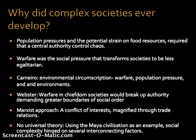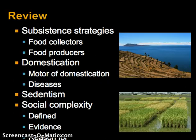Why do complex societies ever develop? There are a number of different theories, ranging from population pressures to warfare, environmental circumscription, and a Marxist approach involving conflict of interest through social relations. Overall, archaeologists do not agree on a universal theory. They use Maya civilization as an example where social complexity hinges on several interconnecting factors. In this lecture, I hope to have provided an overview of subsistence strategies, domestication, sedentism, social complexity, and the evidence from the archaeological record — along with the conclusion that there is no one universal theory for why social complexity or complex societies developed.